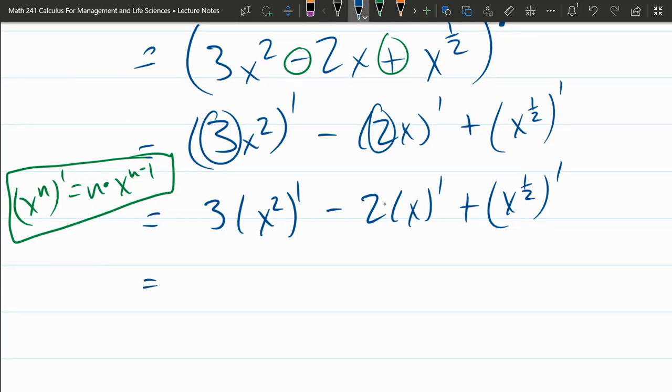All right, first one's easy. Bring the square down. So it's 2 times x to the first power. But again, I told you don't write first powers in calculus class. So I'm just writing it as 2x. That's it.